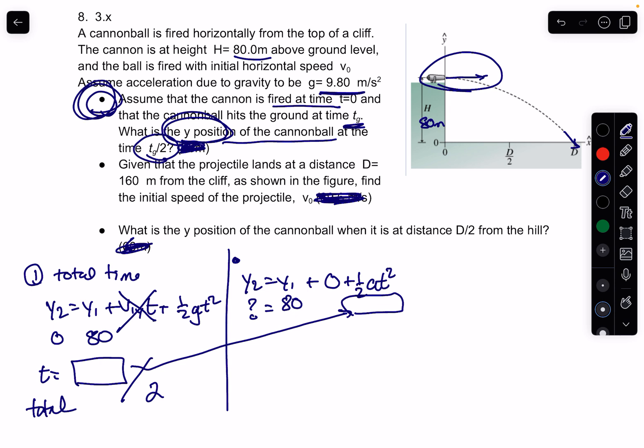The second says, given the projectile lands at a distance 160. So they've given us 160 meters from this distance to this distance. The question is, what is the initial speed of the projectile? Well, the good news is that's a very simple problem. Because in the x direction, x2 equals x1 plus v1xt plus 1 half at squared.